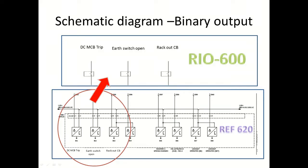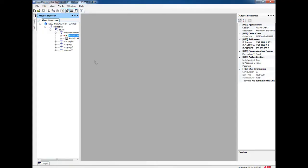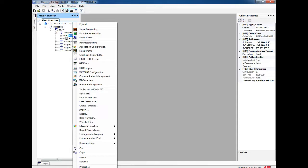Let me go into the video section. First, we will open PCM600. On that, click on the template of RIO. First, we go for binary input configuration. For that, there is no need to make application configuration in RIO — we have to make only a data set in the RIO. Click on the template of the RIO, right click, and go for IEC 61850 configuration.